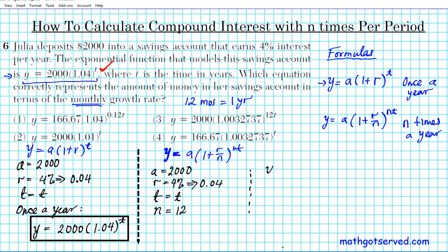So we substitute all that into the formula. We're going to have y equals 2000 times 1 plus 0.04 over 12 raised to the 12t. And if you just look at the setup we have right here, you can automatically see that the correct answer is option number 3.